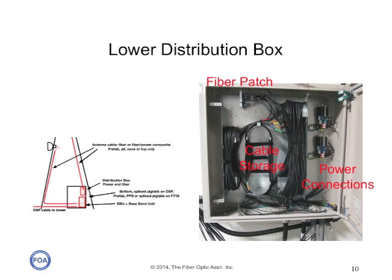The lower distribution box also handles both fiber and copper connections, but it's bigger to allow storage for excess fiber optic cable in case the prefab cable is too long. If the cable is too long, the armored jacket can be stripped off and the excess fiber stored in this box. The copper conductors are cut to length. The box also has provision for grounding and bonding the cables, including the corrugated metal armor on the cable.